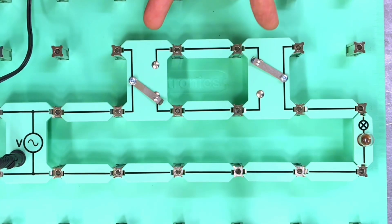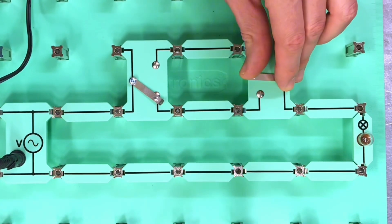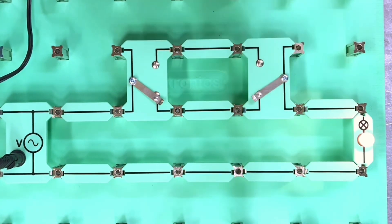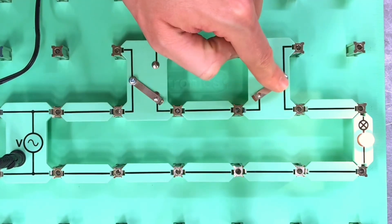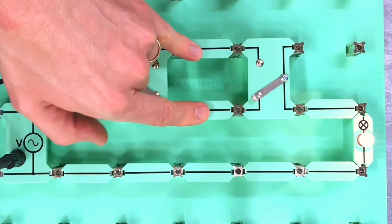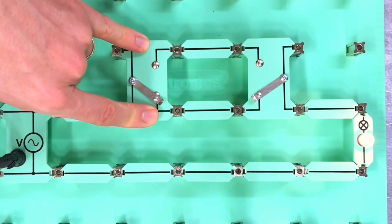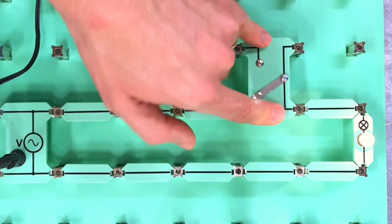You can see it doesn't matter which switch we operate. In fact, if we go back now and switch this one over, we can see now that the lamp is illuminated once more as the current flows down this strapper, across the switch contact, and onto the switch line. So we could make these a lot longer, have a switch at one end of a large corridor or a warehouse and a switch at the other end, and therefore we could operate the lights.